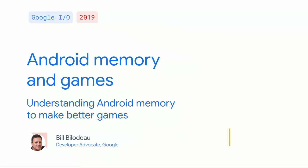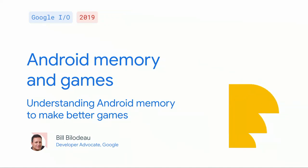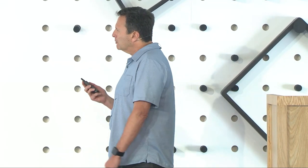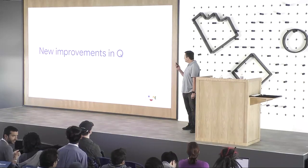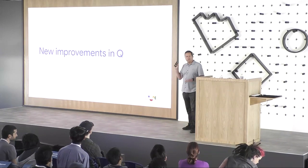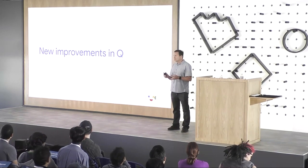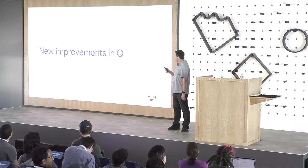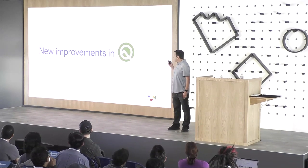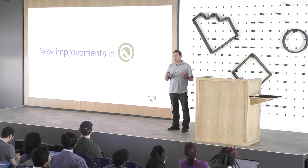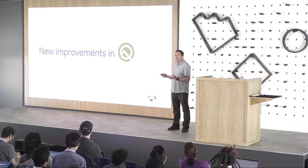Working with game developers, oftentimes I hear things about memory — problems they have running out of memory. I want to talk about some of the things about memory and Android. One thing I first want to mention is there have been some improvements in Android Q with respect to memory. During my slides, I'm going to be showing this Q logo to help you remember when something is new in Q.